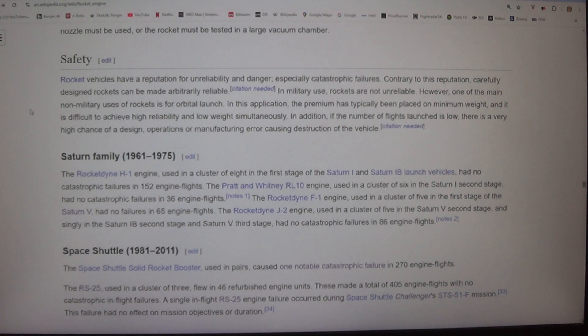Space Shuttle (1981-2011). The Space Shuttle solid rocket booster used in pairs caused one notable catastrophic failure in 270 engine flights. The RS-25, used in a cluster of three, flew in 46 refurbished engine units. These made a total of 405 engine flights with no catastrophic in-flight failures. A single in-flight RS-25 engine failure occurred during Space Shuttle Challenger's STS-51-F mission. This failure had no effect on mission objectives or duration.